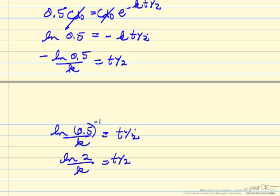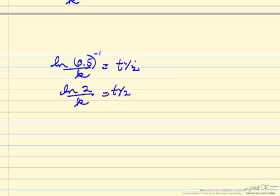And so we can show that the half-life is just log of 2 over k. So for our problem, then the half-life is log of 2 divided by our rate constant, 0.144 hours to minus 1. So our half-life is 4.8 hours.